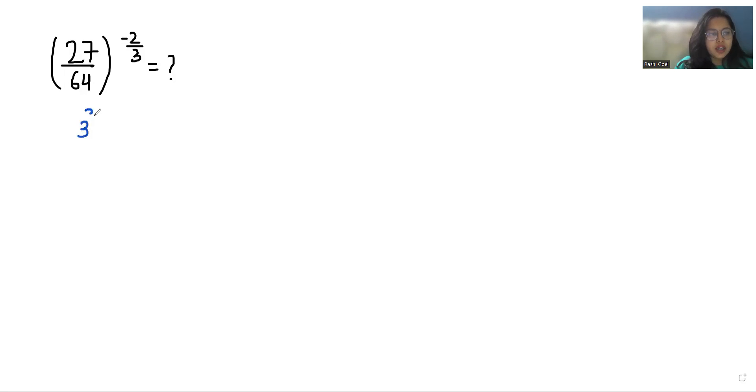So 27 we can write it as 3 cube while 64 as 4 cube whole power negative 2 by 3.